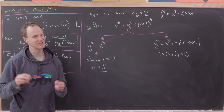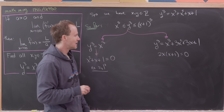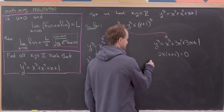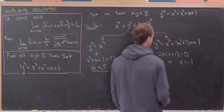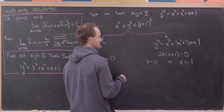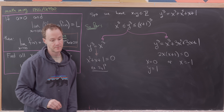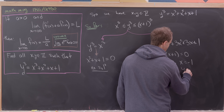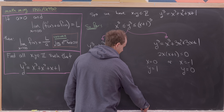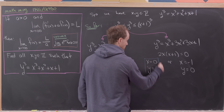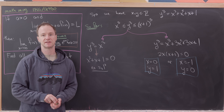In the second case, the equation reduces to 2x(x+1) = 0, giving x = 0 or x = -1. If x = 0 then y = 1, and if x = -1 then y = 0. Those are our two solutions, and in fact the only two solutions. And that's a good place to stop.